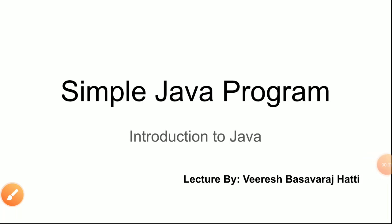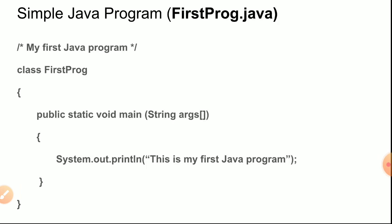Hello everyone. In this session we'll discuss a simple Java program. Here you can see a simple Java program. The first line is 'My First Java Program' — this is a comment, which means the compiler does not execute this part. It's just for the programmer to understand what the program is all about.